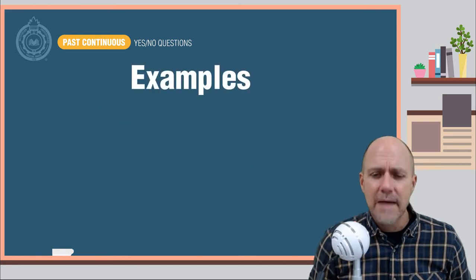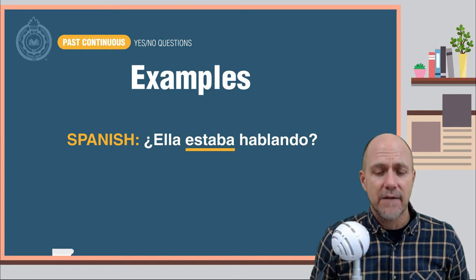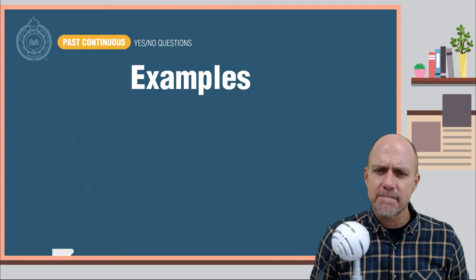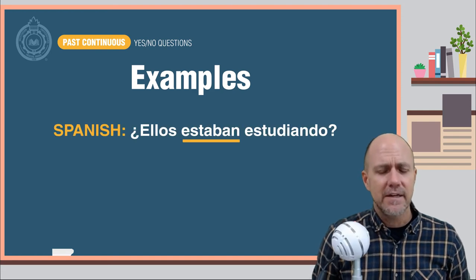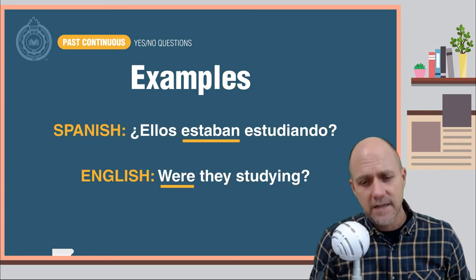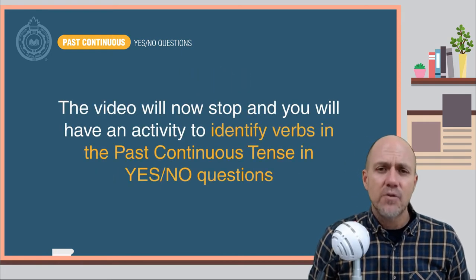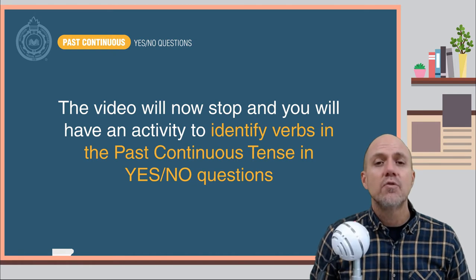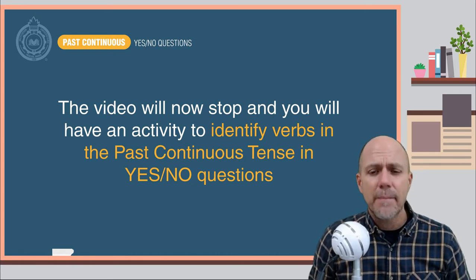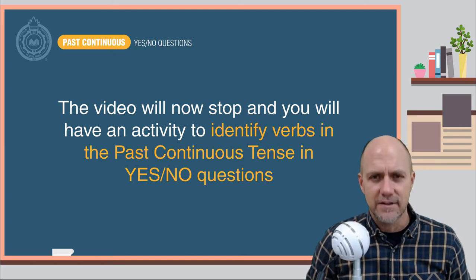Here are some examples. Ella estaba hablando — Was she speaking? Ellos estaban estudiando — Were they studying? The video will now stop, and you will have an activity to identify verbs in the past continuous tense in yes-no questions in English.